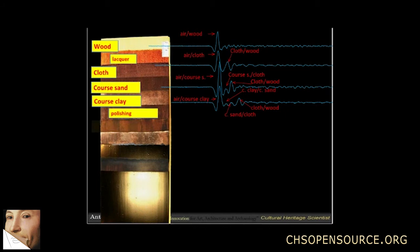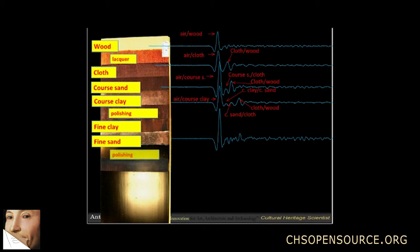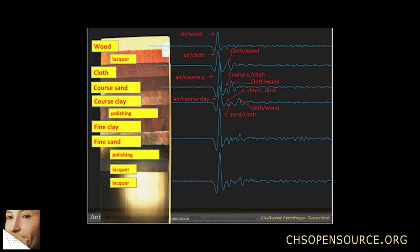Polishing and fine clay don't add detectable peaks, while fine sand layers start to scatter the signal a bit. Further polishing and final lacquers do not add detectable peaks. And eventually this is the spectrum of the lacquer.